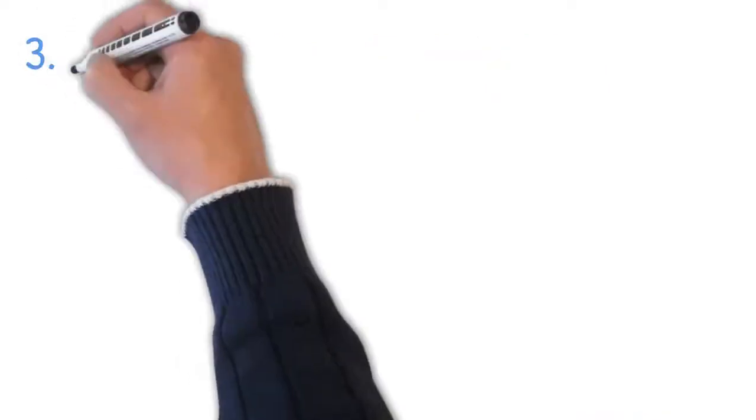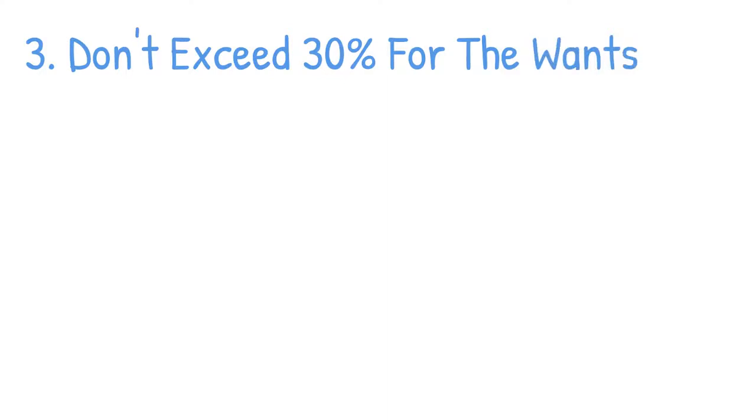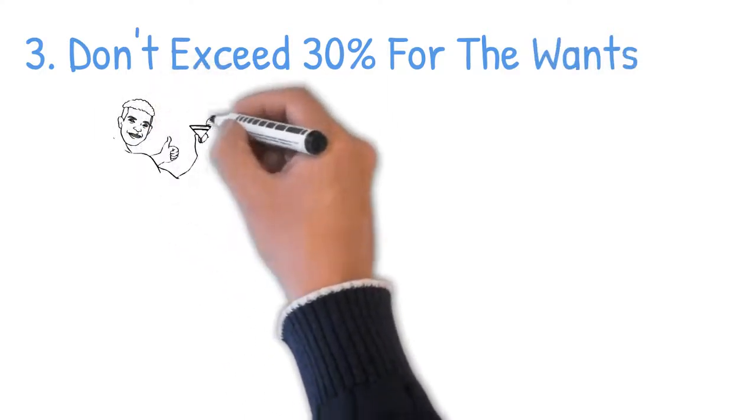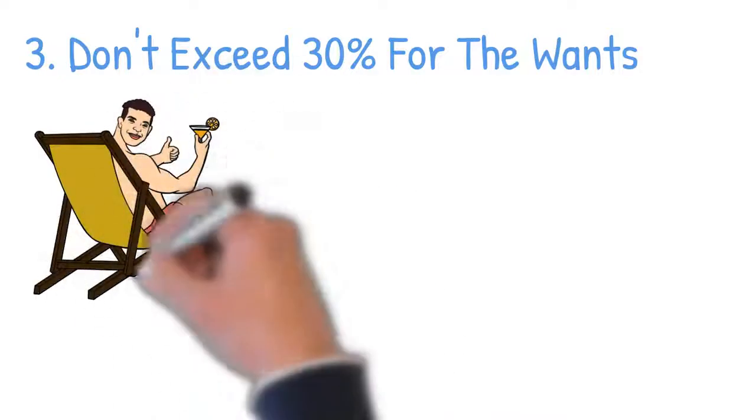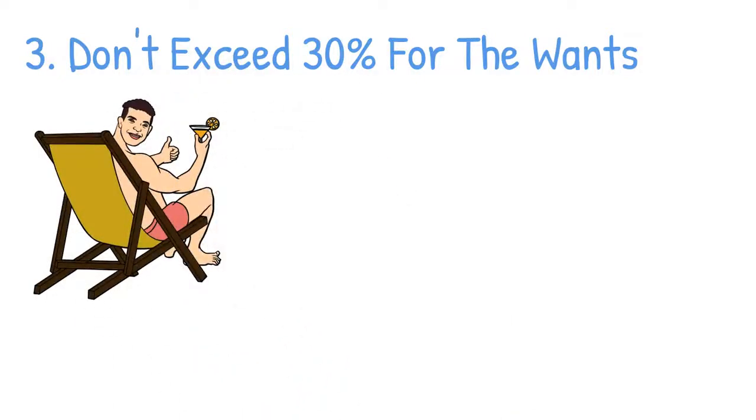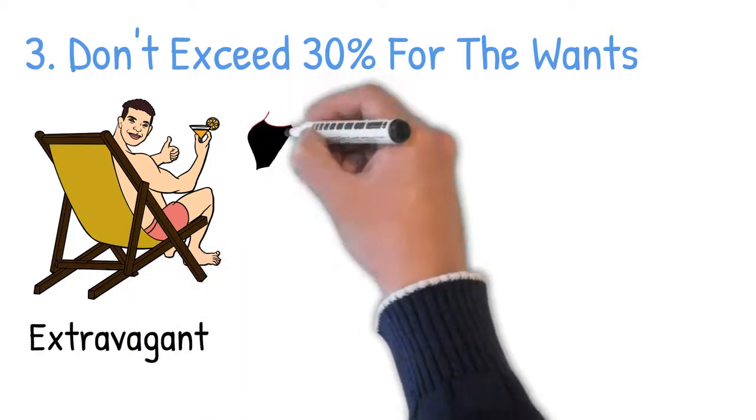Step 3: Don't exceed 30% for the wants. Senator Warren and her daughter recognize the need to have comfort and fun. That's why they recommend a maximum allocation of 30% of your after-tax income to wants. However, that doesn't imply that you should be extravagant.